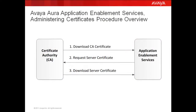Let's take a brief look at the procedure overview for administering certificates. The first step is to download the CA certificate or trusted certificate from the certificate authority and install it on the AES. The second step is to request a server certificate from the certificate authority. The third step is to download the server certificate that's been issued to the AES and install it on the AES server.